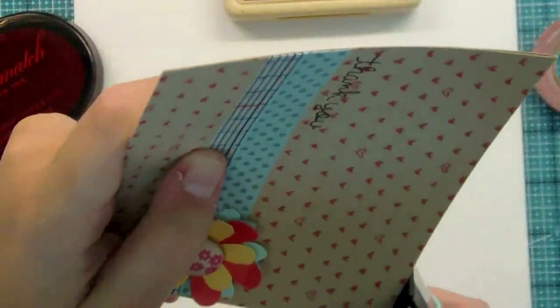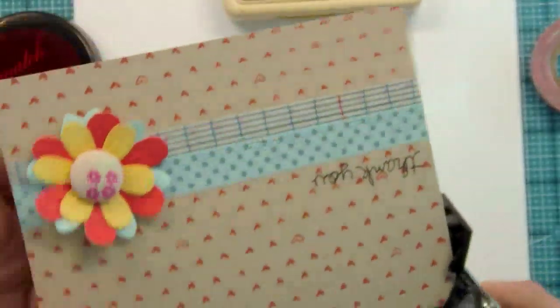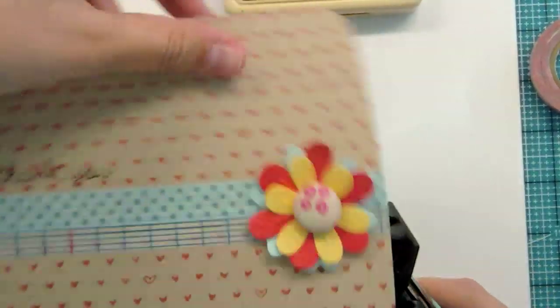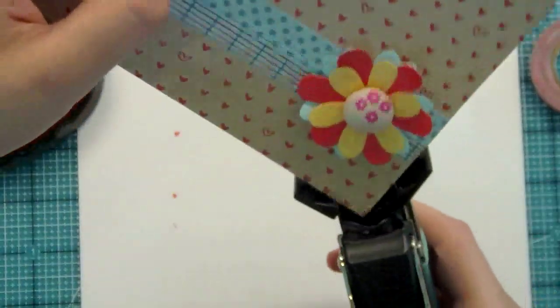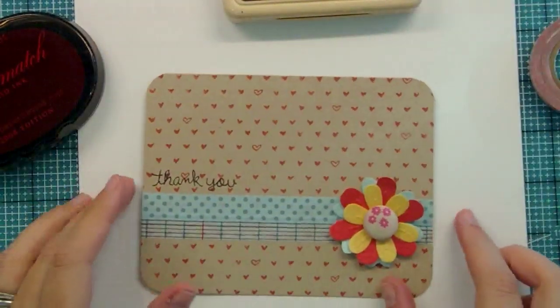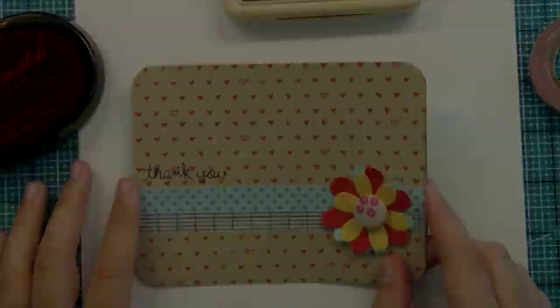The last thing I'm going to do is use my We Are Memory Keepers corner chomper. I just like rounded edges - I think it finishes things off. That's what I do when I don't know what to do. It also keeps you from putting too much stuff on the card. You can see how easy this thing is to use. That is a super quick, super simple card that you could hand out if you need it.